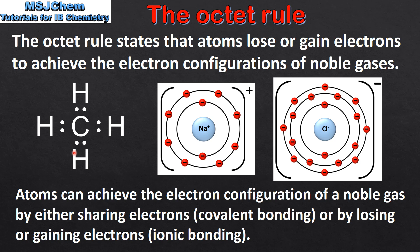Here we can see the Lewis structure for methane, which is CH4. The carbon atom is bonded to each hydrogen atom by a single covalent bond. Covalent bonding involves atoms sharing electrons to achieve the electron configuration of a noble gas. In methane, the carbon atom shares electrons with each hydrogen atom, and by doing so it can achieve the electron configuration of a noble gas. In addition, each hydrogen atom can also achieve the electron configuration of a noble gas by sharing electrons with the carbon atom.